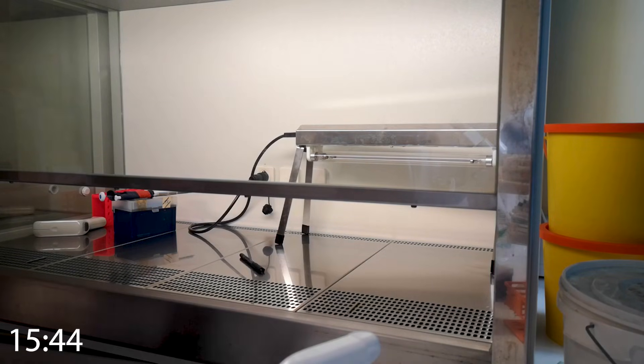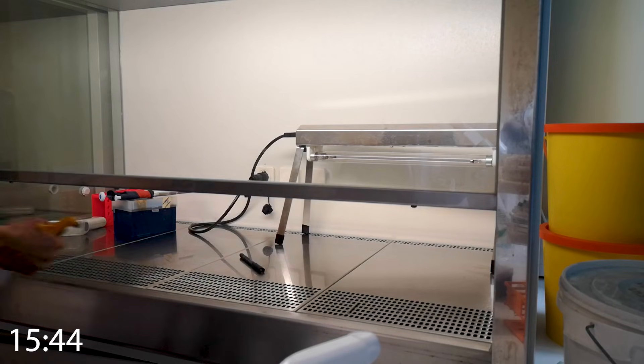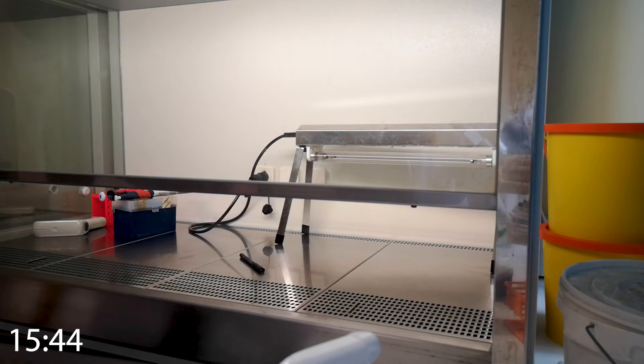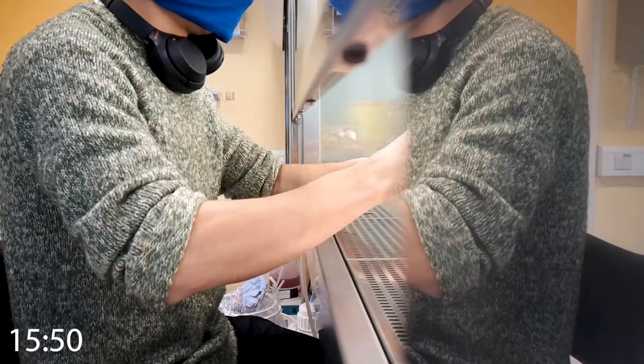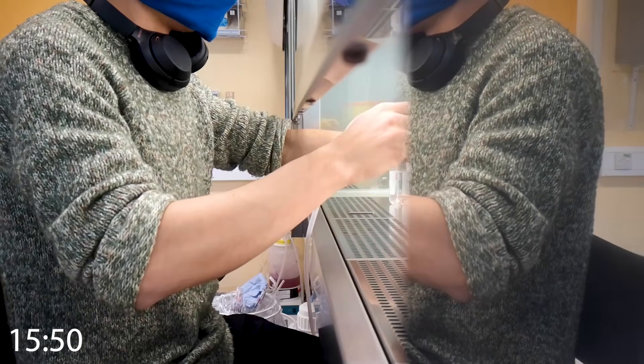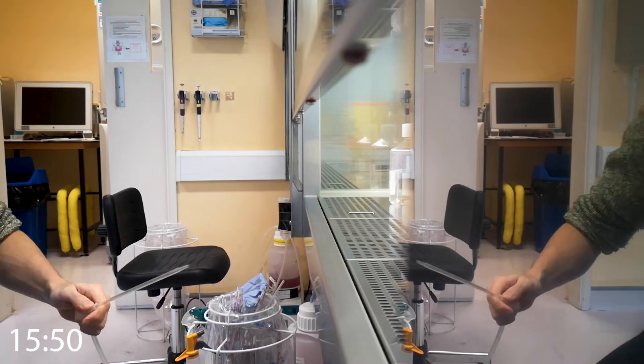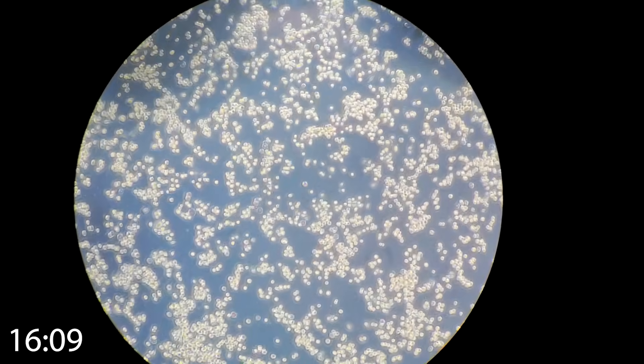I then sanitize the fume hood, which is where I need to be working and it needs to be as clean as Boris Johnson's criminal record. I'm just kidding, it needs to be a lot cleaner. What I'm doing now is adding an enzyme called trypsin to my cancer cells, and this enzyme causes the cells to stop sticking to the plate by breaking down surface proteins. And as you can see, it's made my cancer cells go from this to this, so it's working.